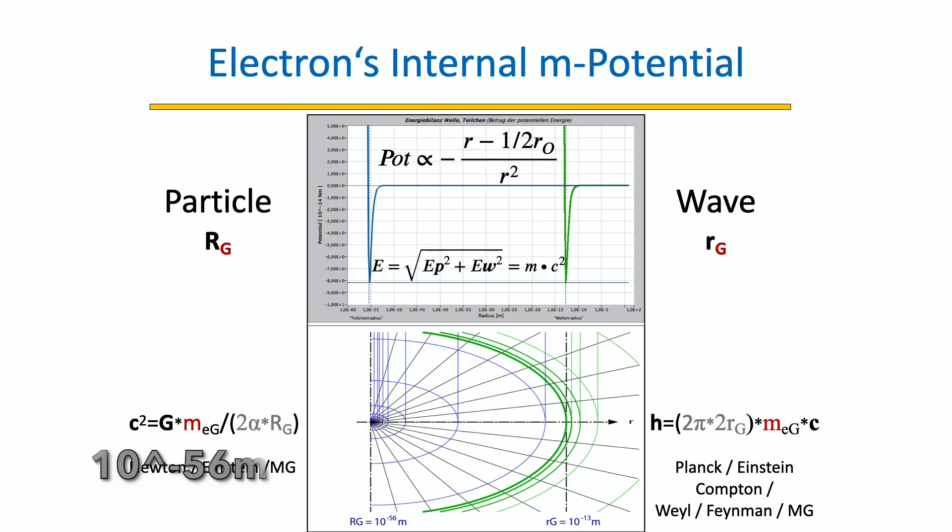The particle radius is very small, 10 to the power of minus 56 meters. The wave radius is significantly larger, 10 to the power of minus 13 meters.